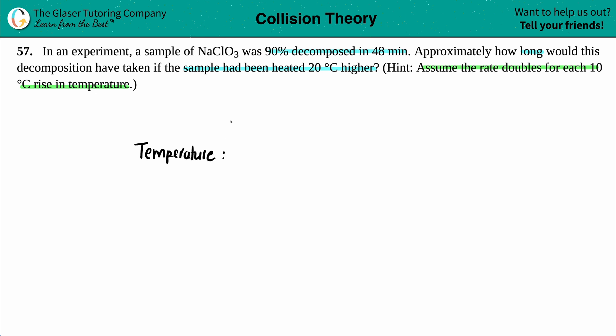Let's say that our starting temperature was 10 degrees Celsius. And let's check out the reaction rate. Now, the reason why I'm setting up this type of two-tier chart is because it said that the rate doubles for each 10 degrees rise in temperature.